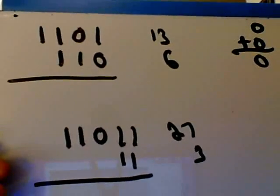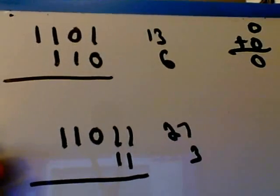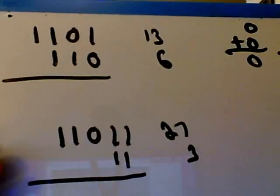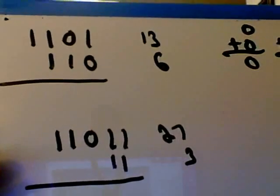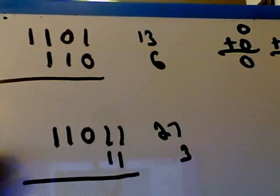And the 6 is represented by no 1s, 1 two, and 1 four, or 4, 2, and a 6. 0 and 1 is a 1. 0 and 1 is a 1 again. 1 and 1 is a 0, carry the 1. 1 and 1 is a 0, carry the 1. And the answer we're going to get is going to be this.